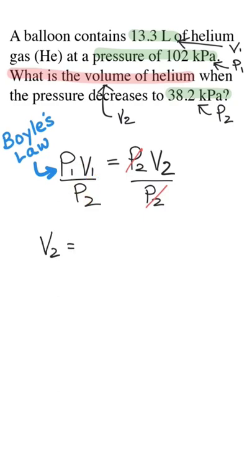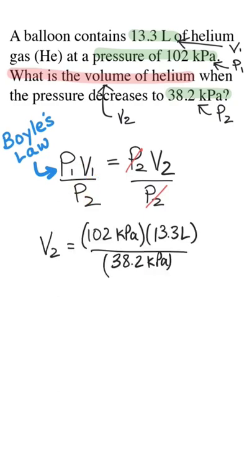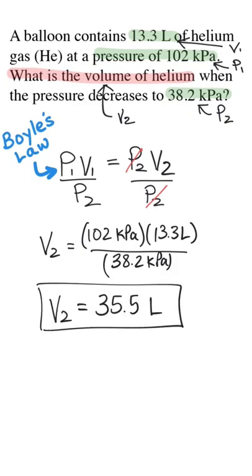Now I can just plug in all the variables that I labeled in the question. I'm going to round my answer to three digits because each of the given variables had three significant digits.